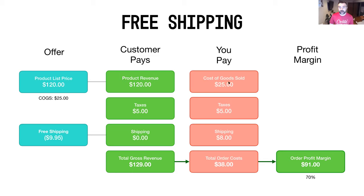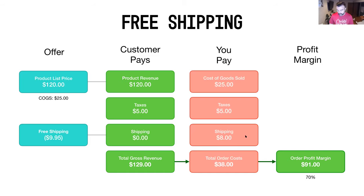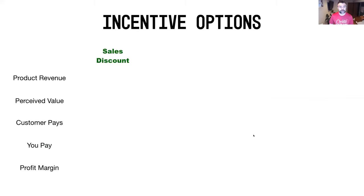Cost of goods sold is $25, taxes are $5, but you still pay $8 in actual shipping costs. Total order cost comes to $38. Even though you're giving up shipping revenue, this scenario actually yields the most margin — because you were only making a couple of dollars on shipping to begin with. The gap between what you charge and what shipping actually costs you is small, so giving it up doesn't hurt much.